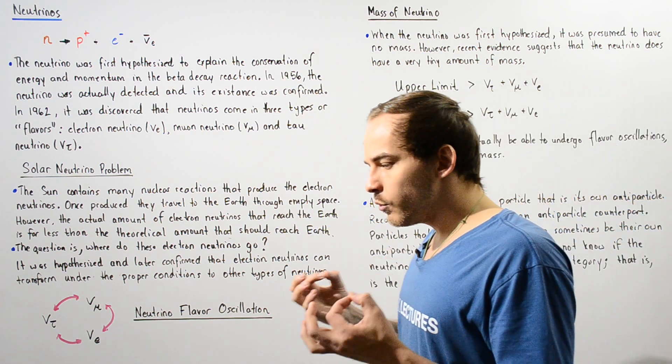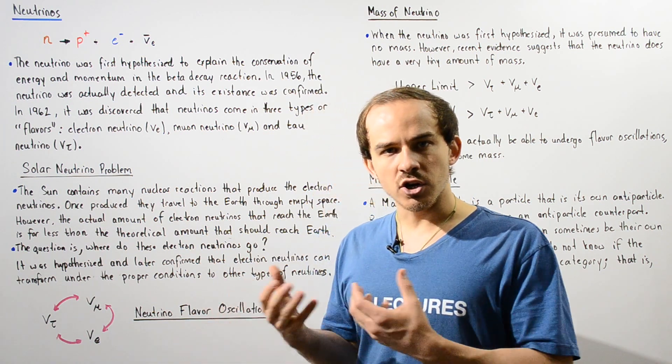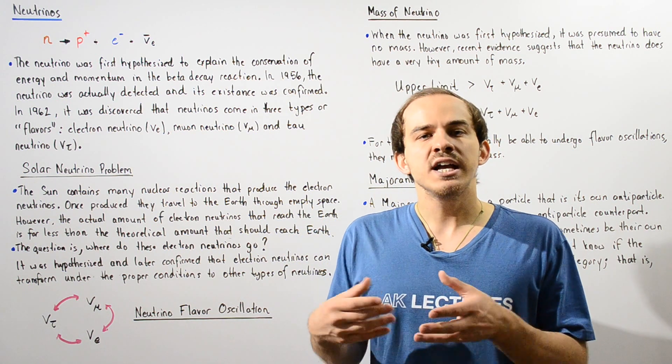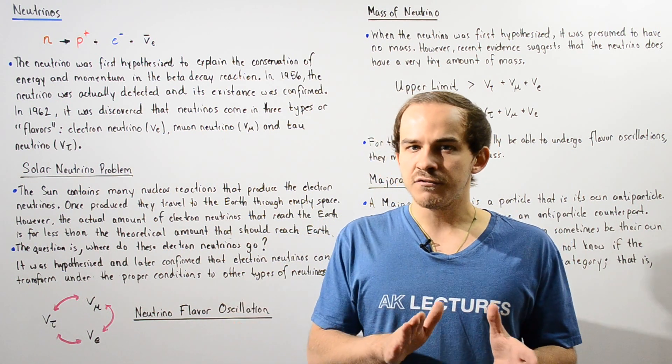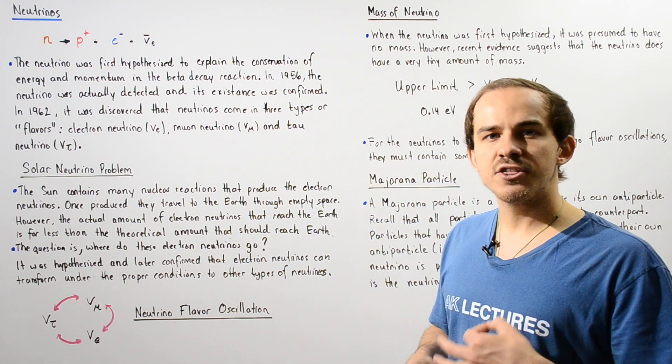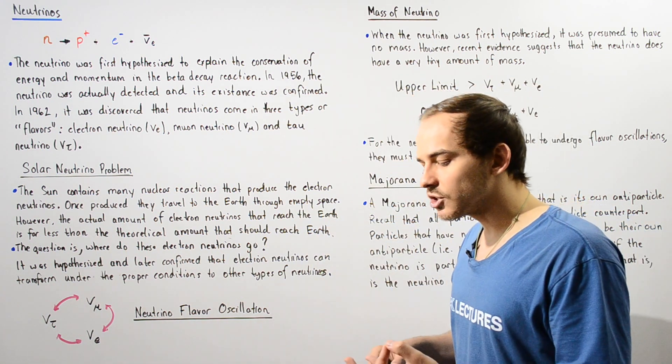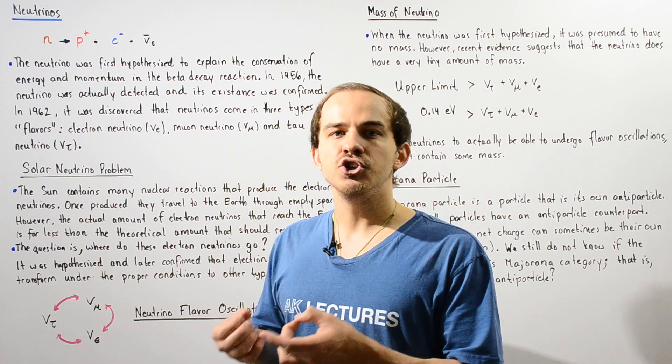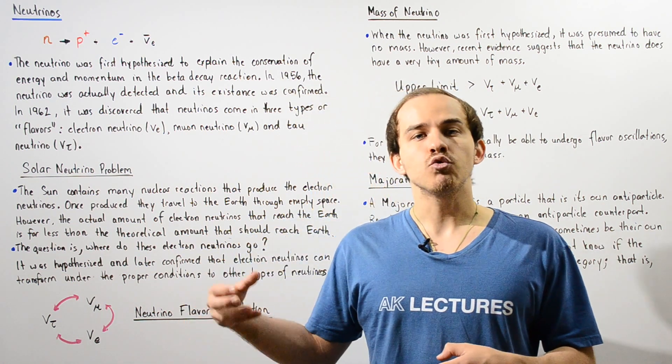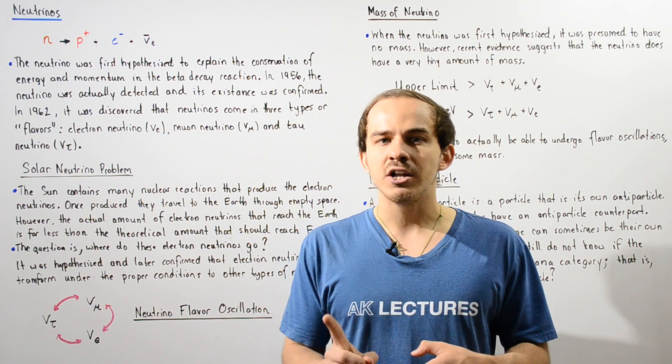If we examine the neutrinos on Earth, where exactly do these neutrinos actually come from? Well, they come from outer space, specifically they come from the sun. Remember, the sun is a thermonuclear reactor. It basically contains nuclear fusion reactions, nuclear reactions that readily produce electron neutrinos.